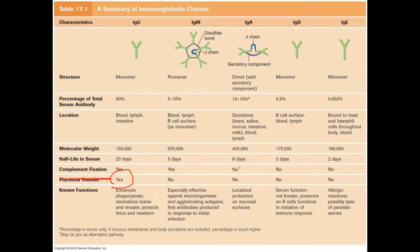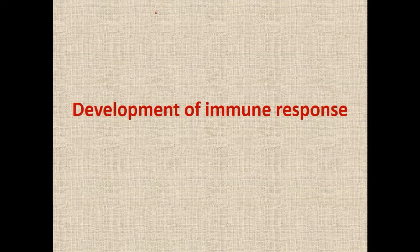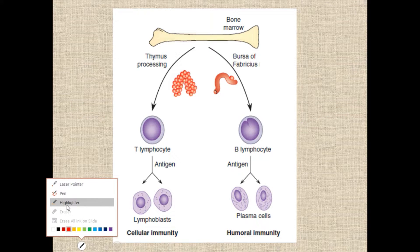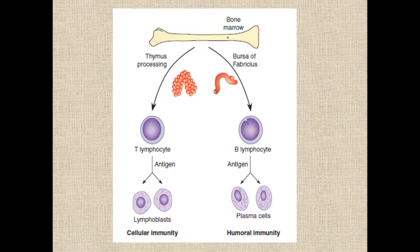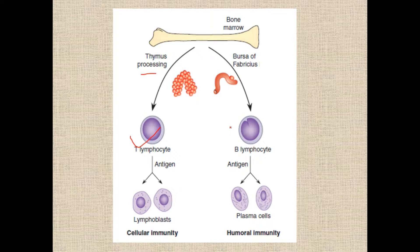Regarding the development of immune response: from the bone marrow, two different types of lymphocyte precursors are produced. The lymphocytes whose maturation takes place in the thymus are known as T lymphocytes, and those whose maturation still takes place in the bone marrow are known as B lymphocytes.